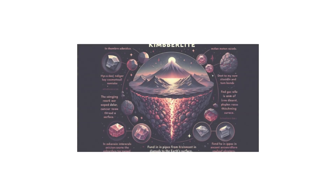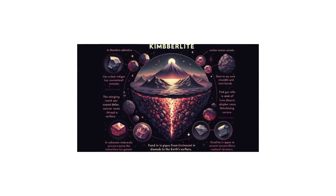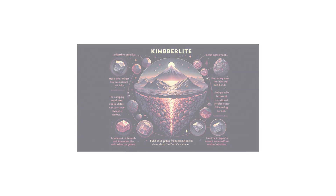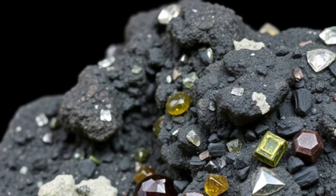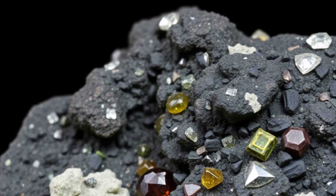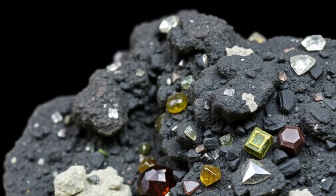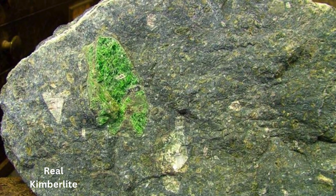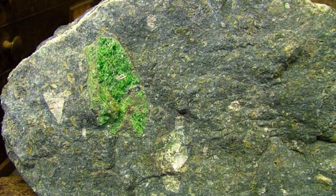In summary, kimberlite is a deep-origin volcanic rock primarily known for carrying diamonds to the earth's surface. Its appearance varies, but it typically contains minerals like olivine and garnet. Found in pipes from ancient volcanic eruptions, it's the cornerstone of the diamond mining industry.